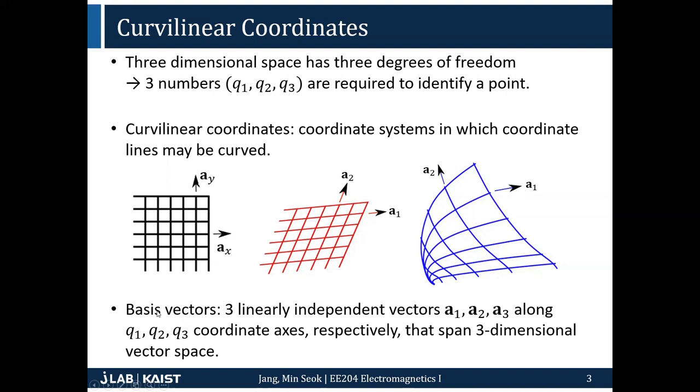Basis vectors - you have three linearly independent basis vectors A1, A2, A3, along Q1, Q2, Q3 coordinate axes. The coordinate axes Q1, Q2, Q3 correspond to R theta phi in spherical coordinate. And then A1, A2, A3 is like AR, A-theta, A-phi in basis vectors.